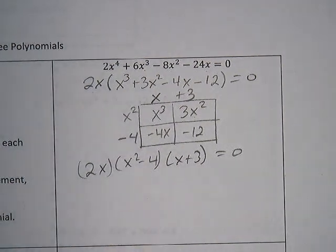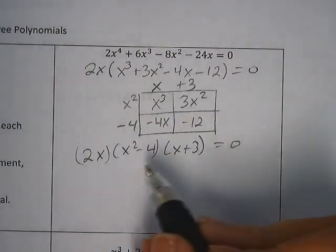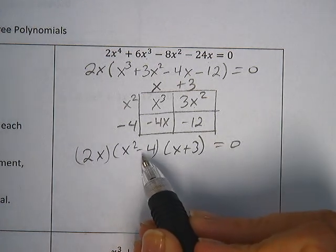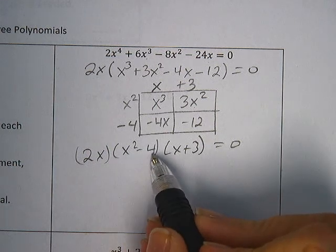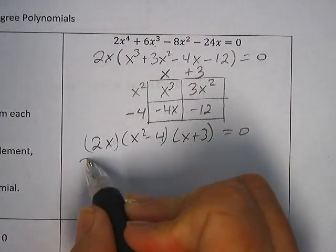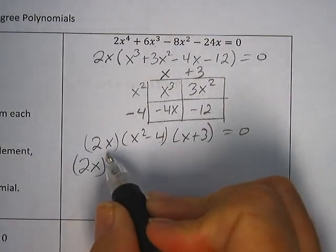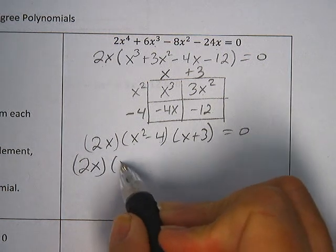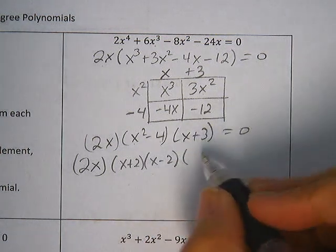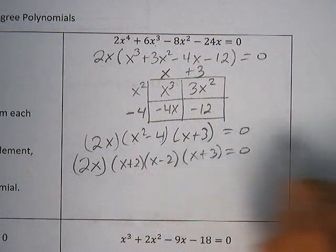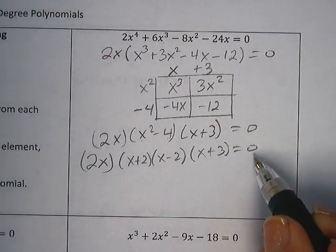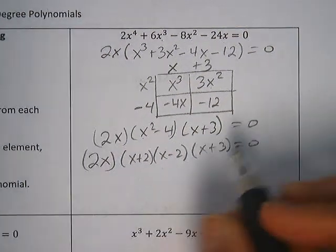Those are all still set equal to zero. At this point we want to take a look because we're going to try solving. I have this x squared term. We want to remember that x squared and 4 are both perfect squares, so we can factor that using our difference of squares formula. So my factors now are 2x. The x squared minus 4 factors into x plus 2 multiplied by x minus 2, multiplied by that x plus 3. We're done factoring at this point. Now to solve, I need to set each factor equal to zero.